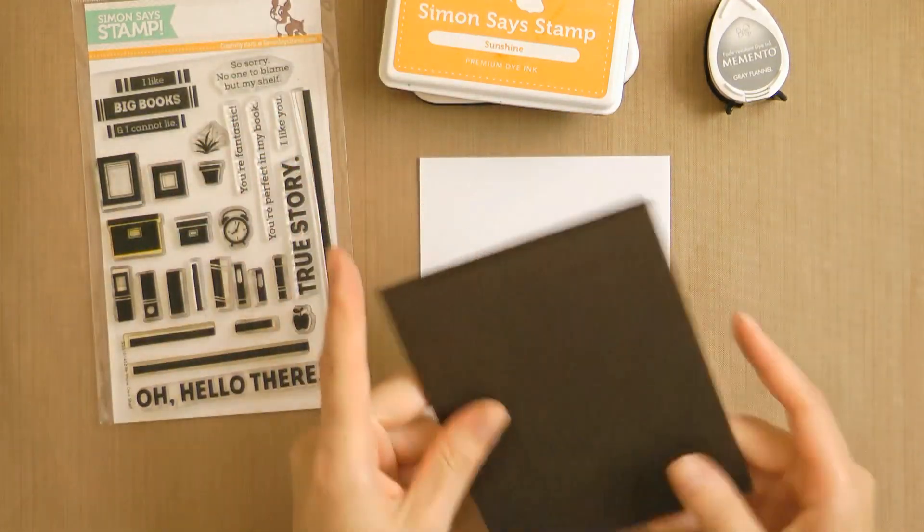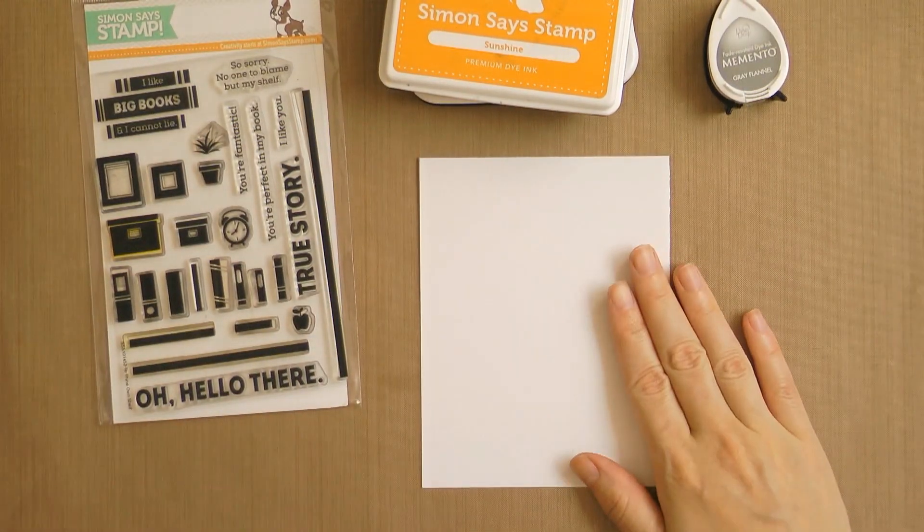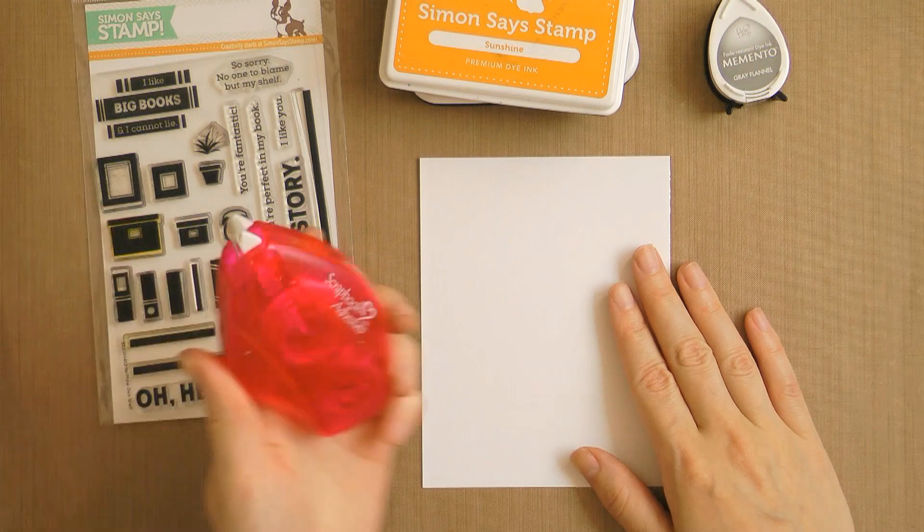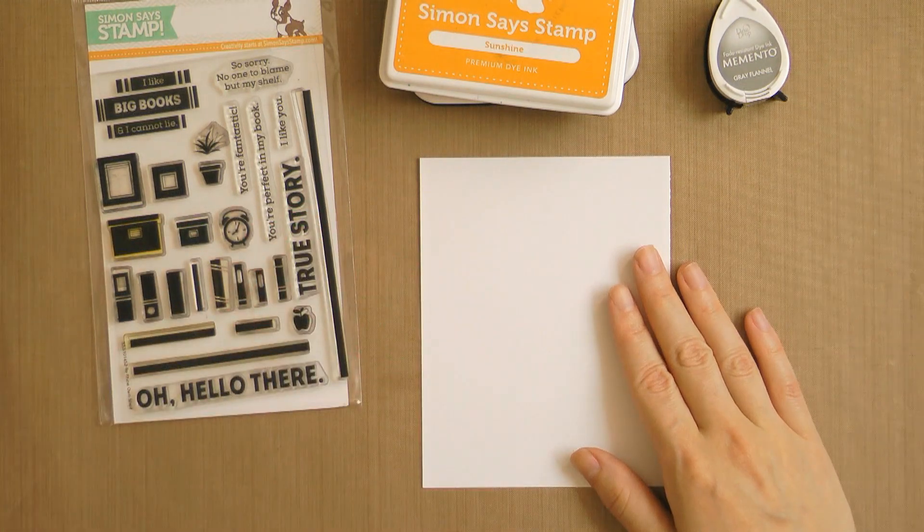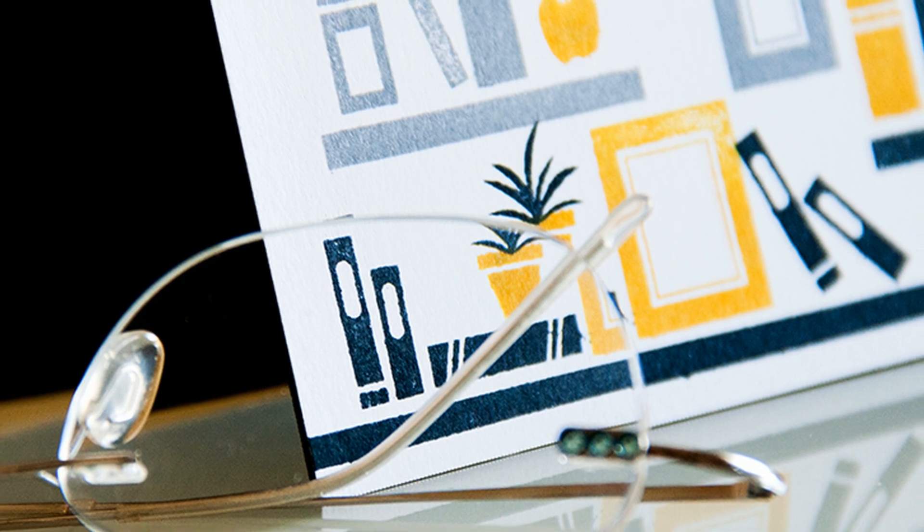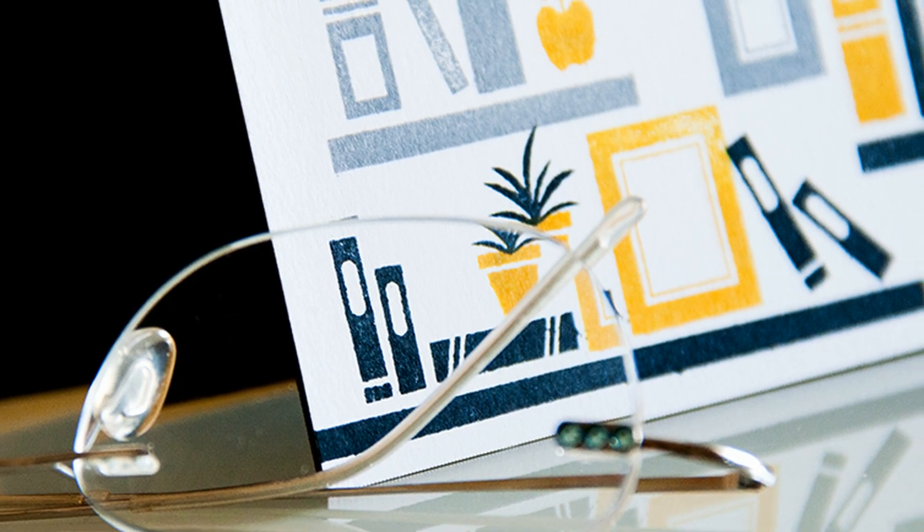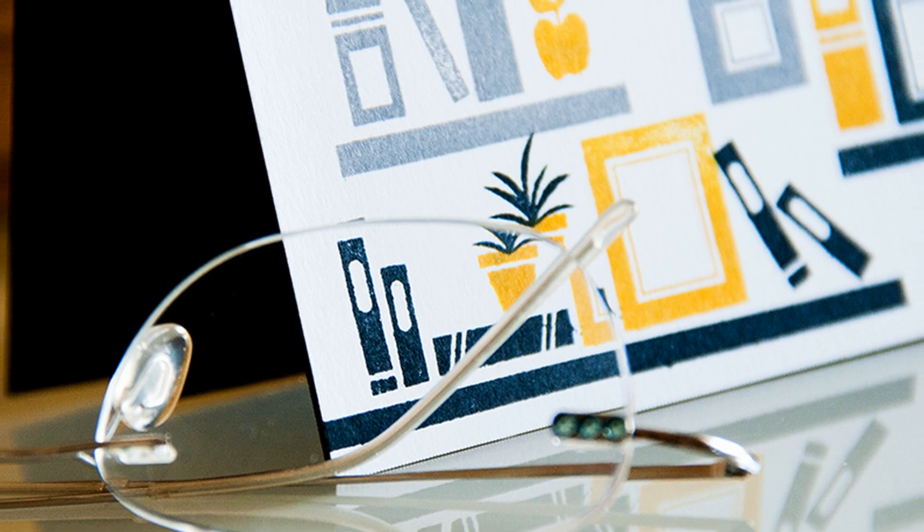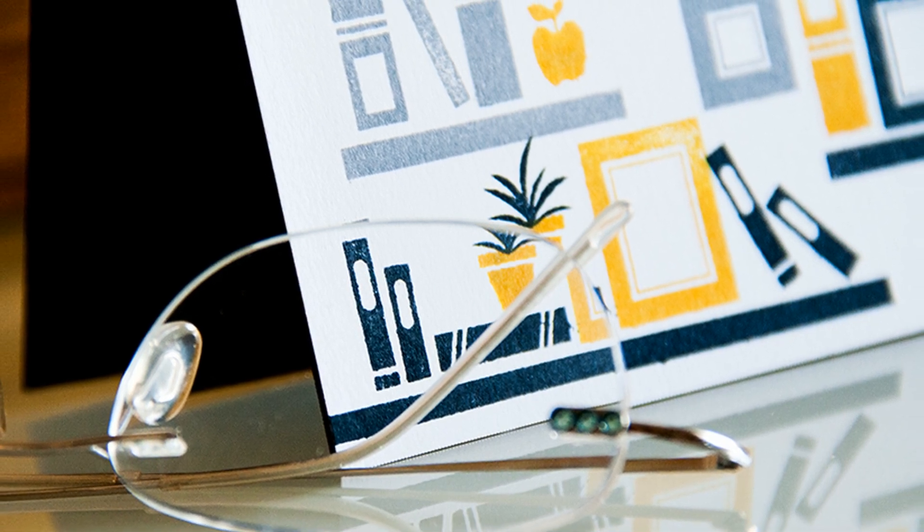For my card I'm also going to use this dark chocolate card stock from Simon Says Stamp. I have already made an A2 top folding card out of it. And I also have a piece of Neenah Solar White card stock from my stash. I actually had it taped down to my craft mat using some repositionable adhesive from Scrapbook Adhesives as I don't like my paper to move while I'm stamping.